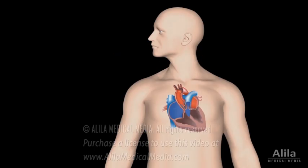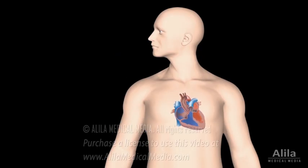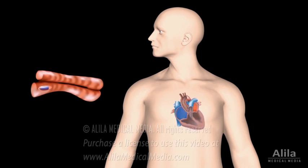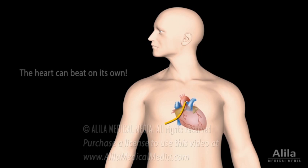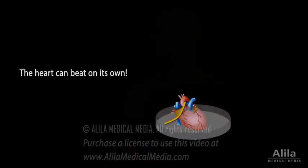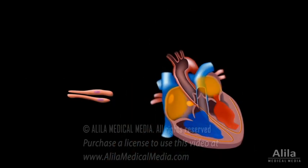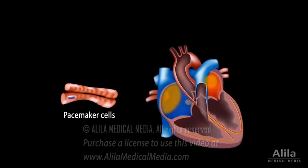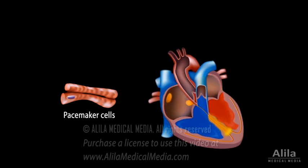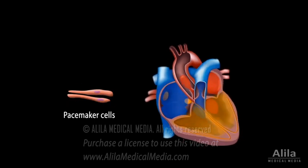The heart is essentially a muscle that contracts and pumps blood. It consists of specialized muscle cells called cardiac myocytes. Contraction of these cells is initiated by electrical impulses called action potentials. Unlike skeletal muscles, which must be stimulated by the nervous system, the heart generates its own electrical stimulation. The impulses start from a small group of pacemaker cells — modified myocytes that lose the ability to contract and become specialized for initiating action potentials.